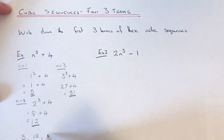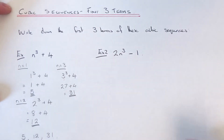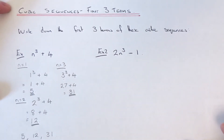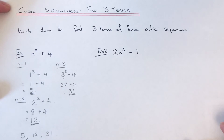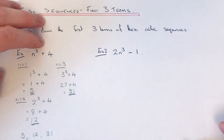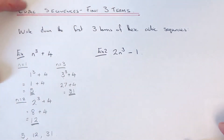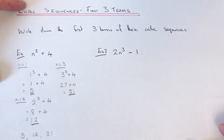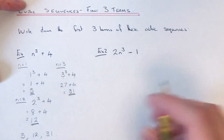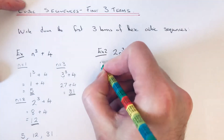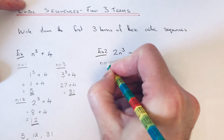So our first three terms of our sequence are 5, 12, and 31. Let's move on to our second example. This time we have a slightly harder nth term: 2n cubed minus 1.